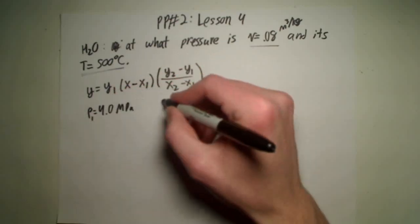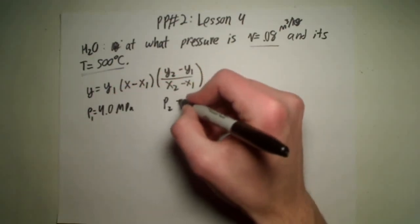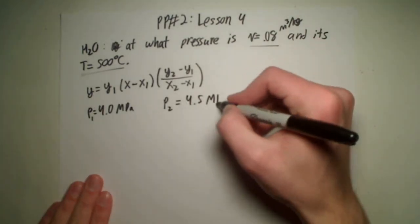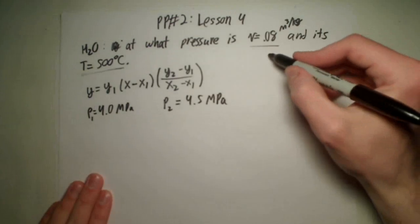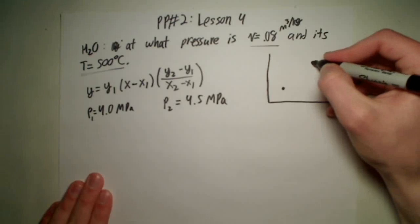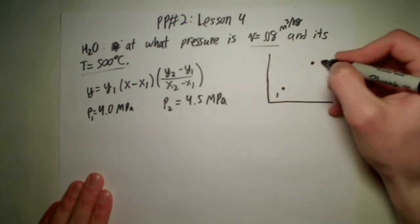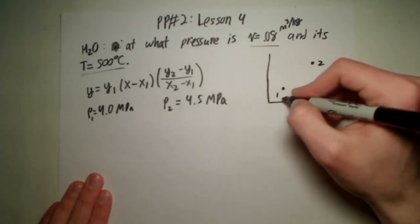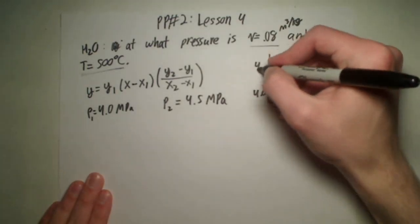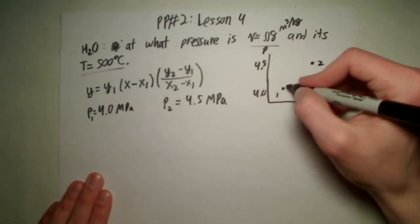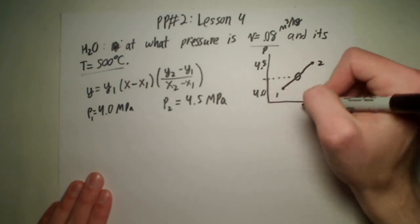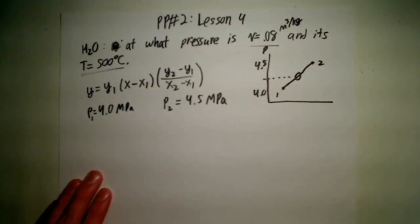You're going to see that it's going to be in between a pressure of 4.0 megapascals — that's P1 — and P2 is going to be 4.5 megapascals. If we draw out the linear interpolation diagram, here's point 1 and here's point 2: 4.0 on one side, 4.5 on the other, since this is the pressure axis. The pressure we're looking for is going to be somewhere in between these two points.